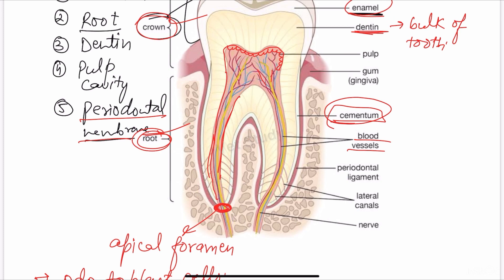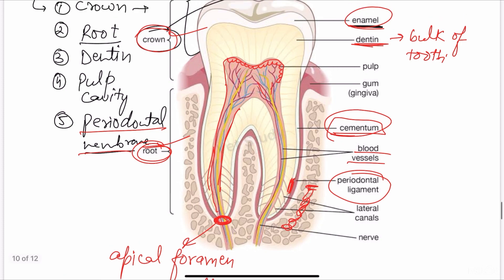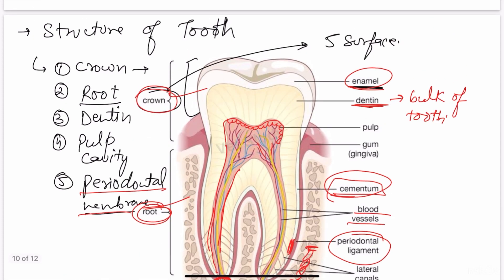The last portion is the periodontal membrane. The periodontal membrane actually holds the tooth. It is present between the bony alveolus and the cementum. The periodontal ligament or periodontal membrane is a collagenous layer and it helps in suspending the tooth. These are the five structures present in a tooth.